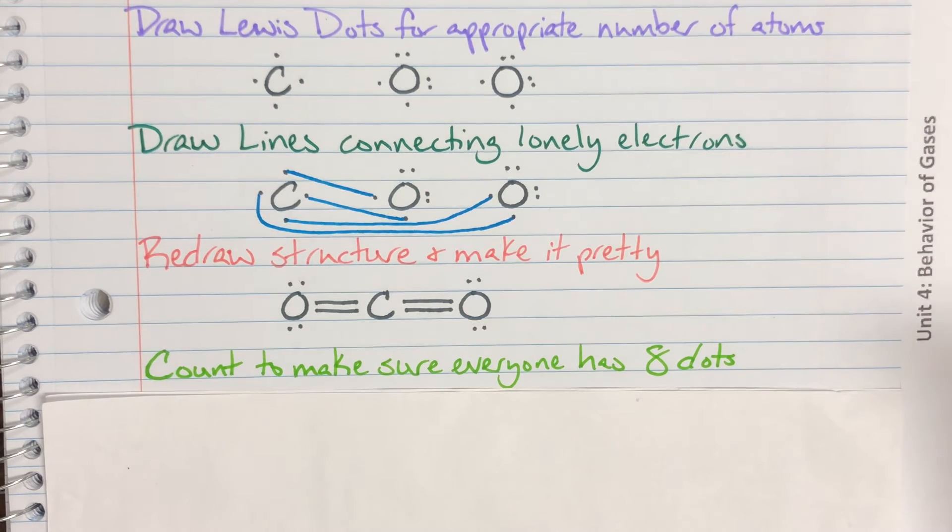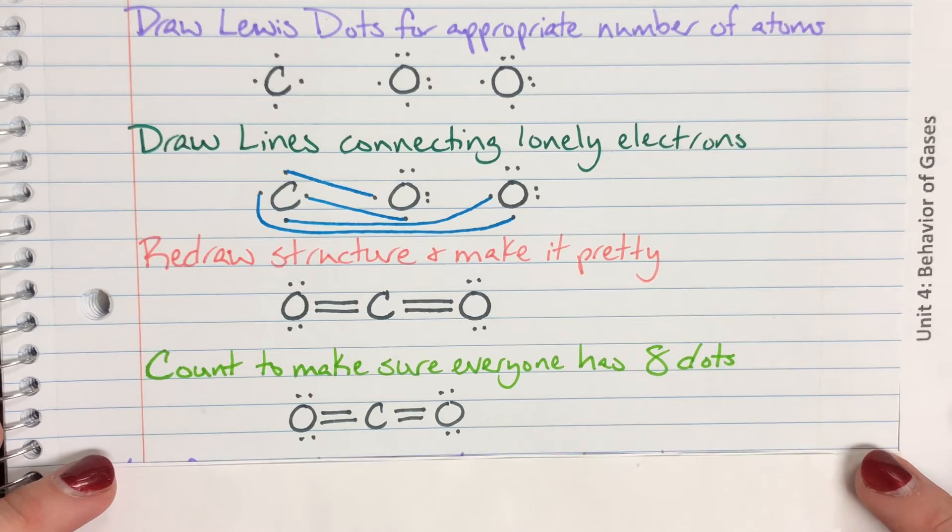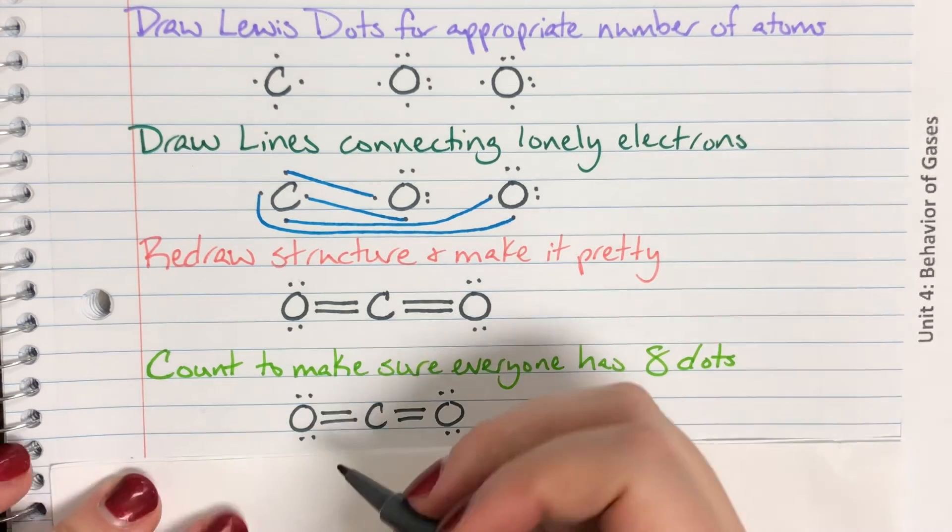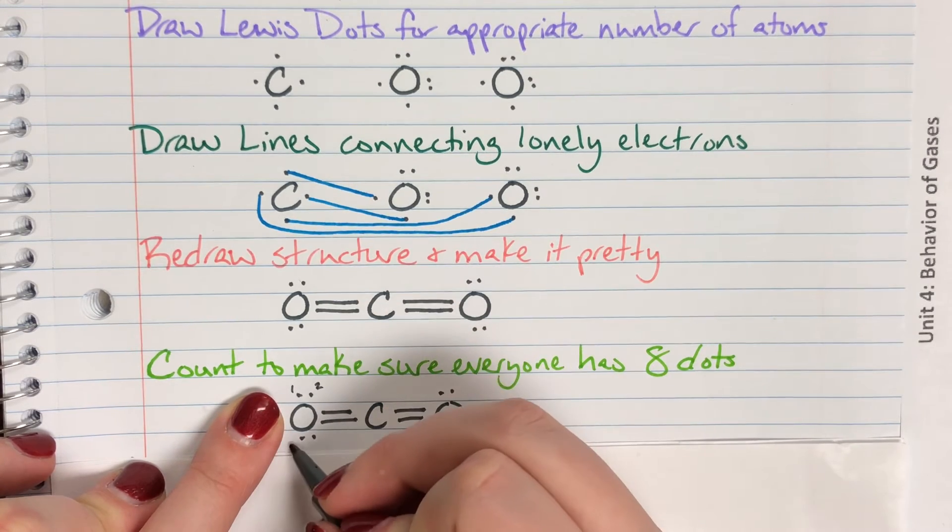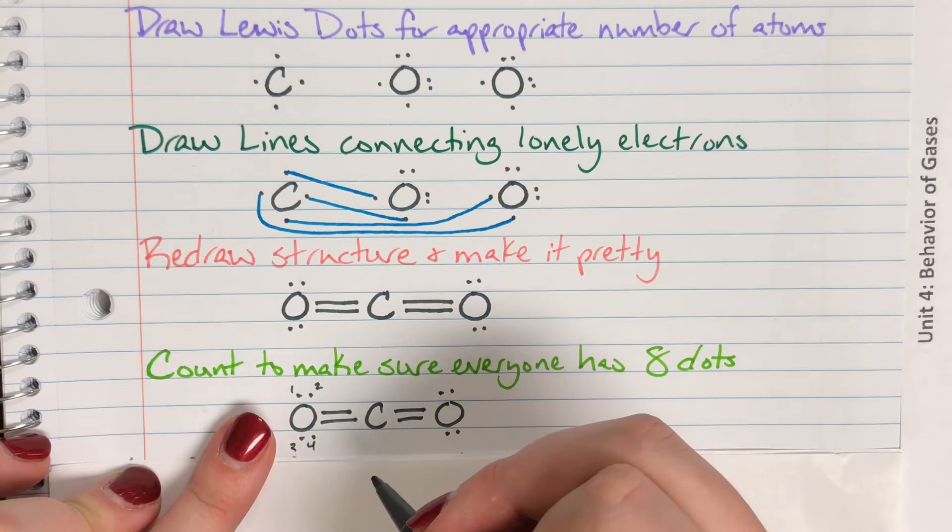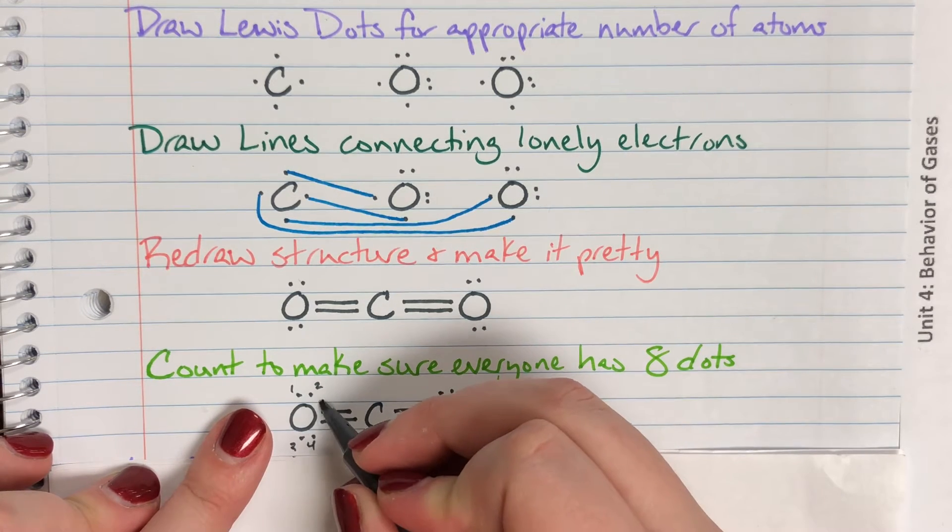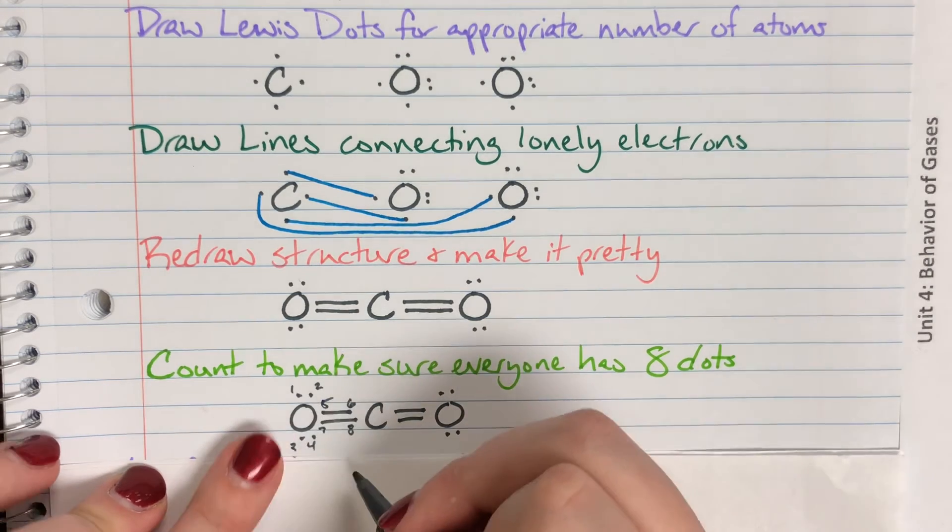Last thing I need to do is I need to count to make sure that everybody has eight to make sure that I made the correct number of bonds. So I am going to go ahead and I am going to count here. So we have, for oxygen, we have one, two, three, four, and each line is two, so we have five, six, seven, eight. So this oxygen is happy.